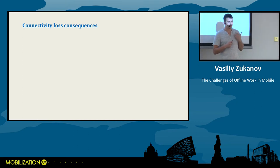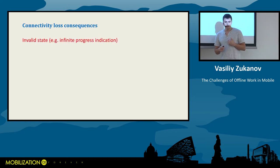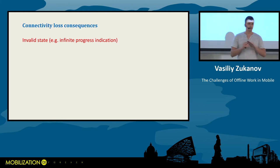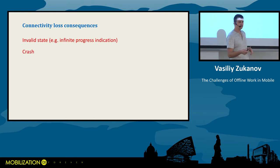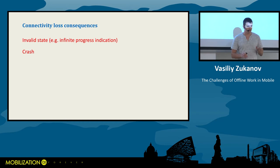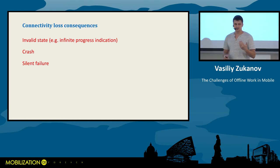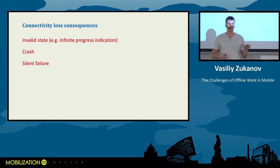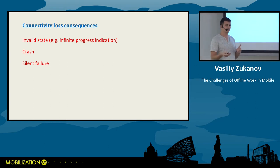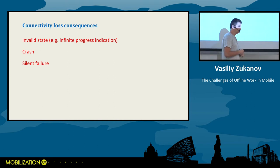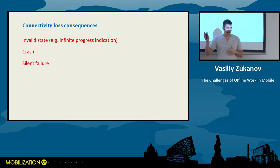So what happens when a user loses connection? Well, the application can enter an invalid state — for example, infinite progress indication. We surely don't want that to happen. Or the application can crash — that's another bad option. And what I hate the most is when I try to do something and the application doesn't do anything. There's no connection, the functionality fails, but it fails silently. I prefer when the application crashes and at least I know something bad happened, rather than the application not doing anything and leaving me wondering whether it works at all.